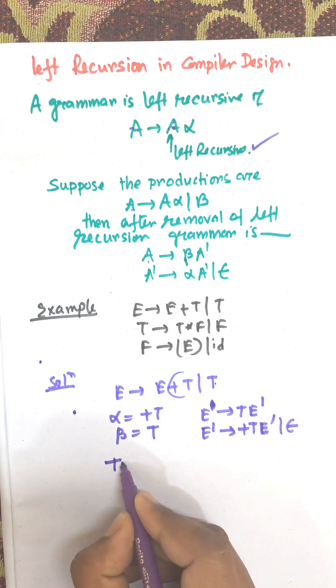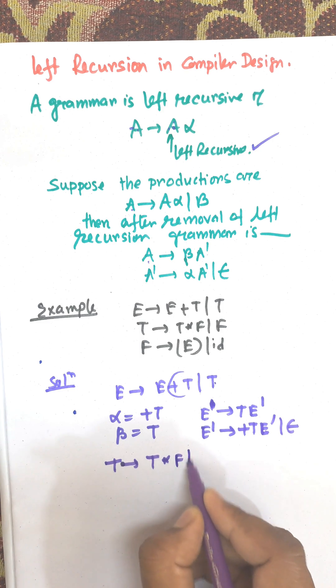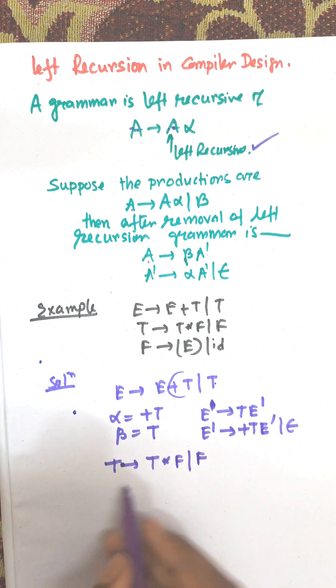Now, let us consider the next production. That is T → T*F | F. Here, A is this one and A. So this will be the alpha. Alpha equals *F. The remaining part is the beta.